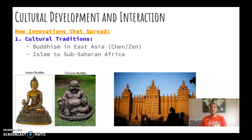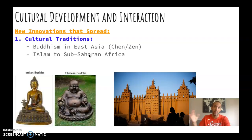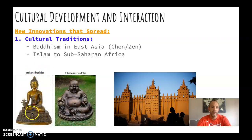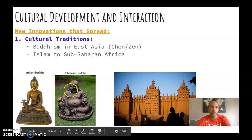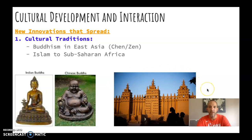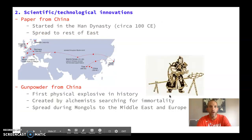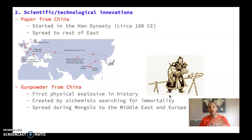Now let's talk about some cultural developments. One of the big themes of these first two units is the spread of cultural traditions. We see Buddhism spread in East Asia — specifically Zen or Chan Buddhism — which we discussed in the China unit. We also see Islam spreading to sub-Saharan Africa. This image shows an example of Islamic architecture in West Africa, recognizable by the clay and earthen construction style.